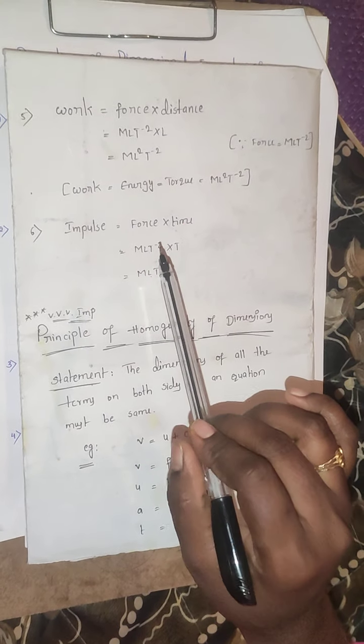Work general formula is force into distance. Force dimensional formula is M, L, T to the power of minus 2. Distance is represented by capital L. So the dimensional formula of work is M, L², T to the power of minus 2 — that is ML²T⁻². Note that work, energy, and torque all share the same dimensional formula.